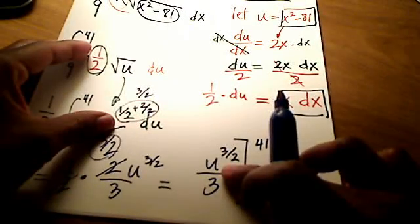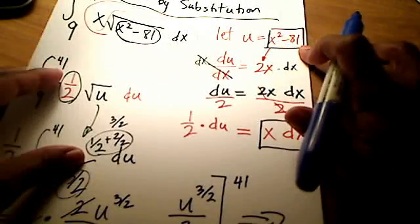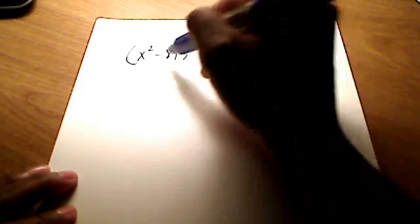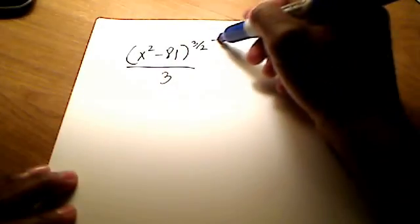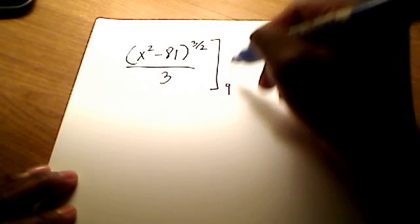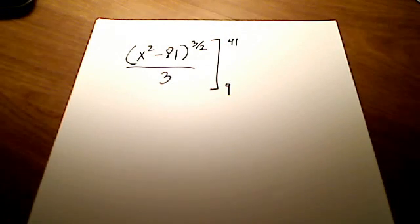Okay. In place of u, I'm going to put in the x squared minus 81. So here's what I've got. I've got x squared minus 81 raised to the 3 halves all over 3 being evaluated between 9 and 41. Okay. That's looking a little bit better.